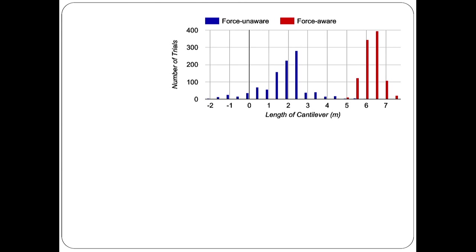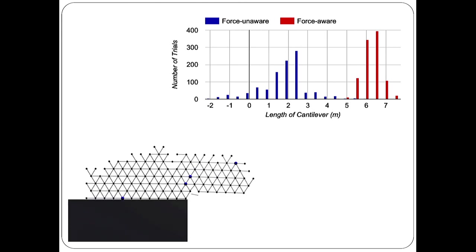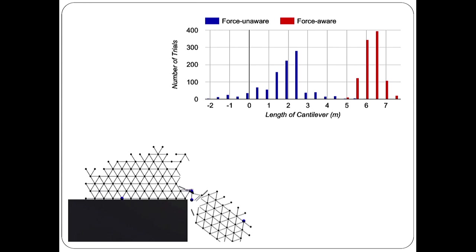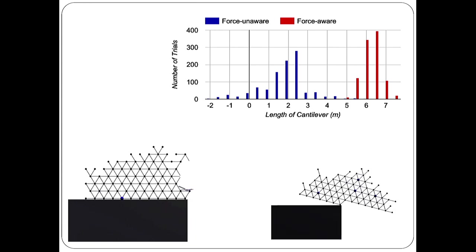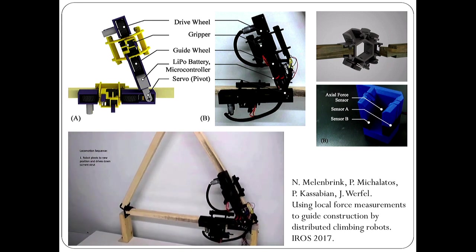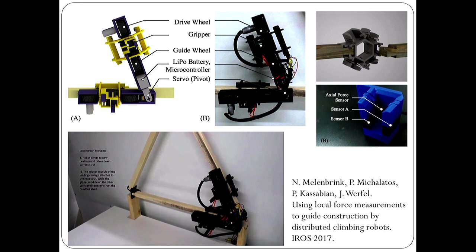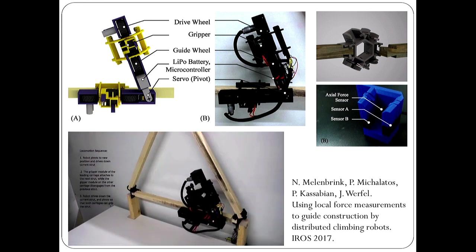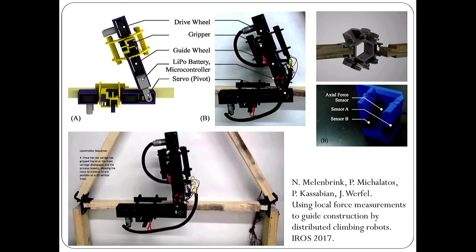By paying attention to those forces, it's possible for robots to build cantilevers that extend much further out — unsupported over gaps — than if they're not paying attention to forces. They can get to much longer distances before the structure fails, either because it breaks through poor decisions or because the whole structure overbalances and topples into the chasm. Those failure modes are put off much longer.